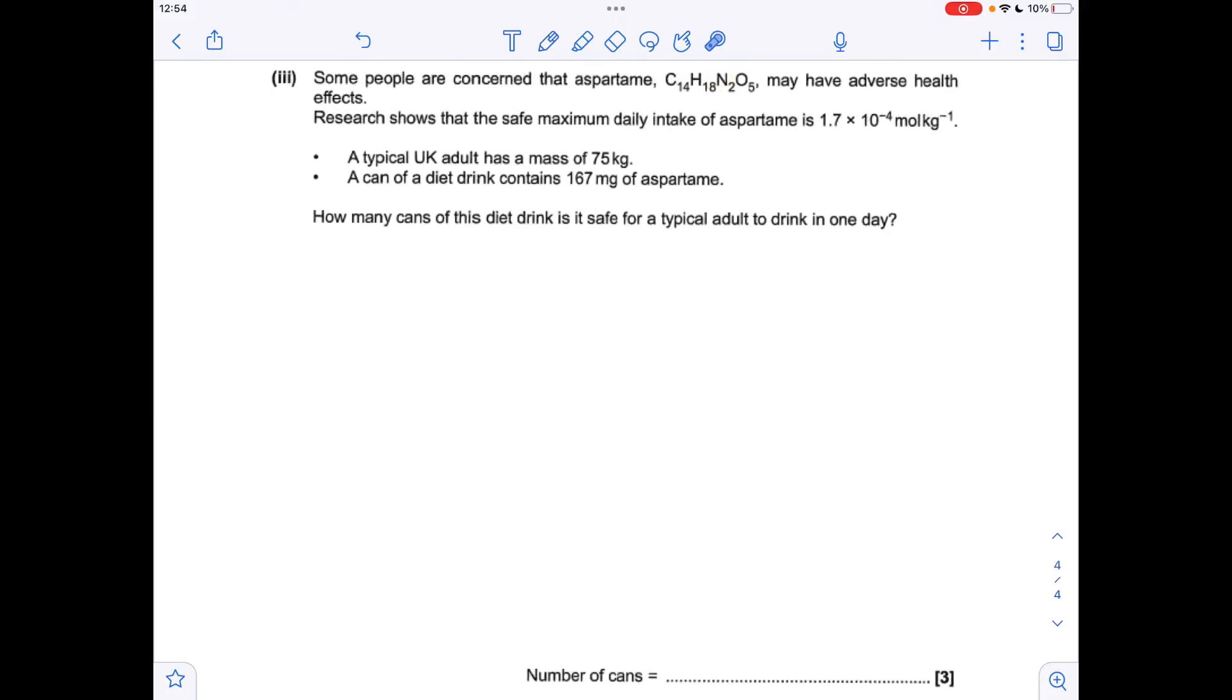And finally the amount of substance calculation, the mole calculation. The first thing I'm going to do is work out the maximum daily intake for a typical adult. I'm just going to multiply the per kilogram value by the average mass of a person. So 75 times that.